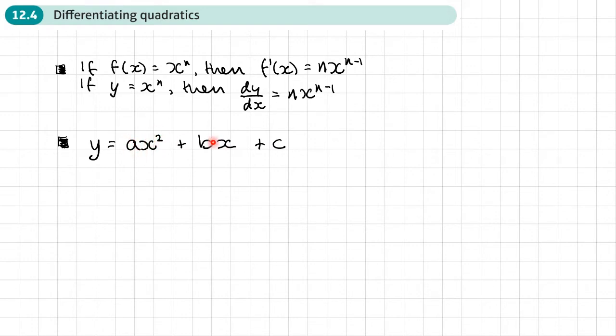So I've got something x squared, something x and a number. Well, let's apply the rule to finding the derivative to each term. So let's look at the ax squared.